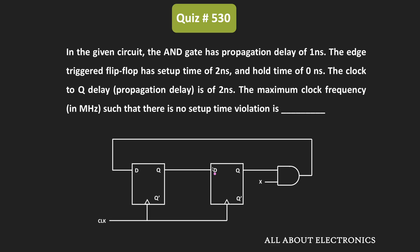Hey friends, welcome to the YouTube channel All About Electronics. In this question, we have been given a sequential circuit where the propagation delay of the AND gate is equal to 1 nanosecond, the propagation delay of the flip-flop (clock-to-Q delay) is equal to 2 nanoseconds, and the setup time for each flip-flop is also equal to 2 nanoseconds.